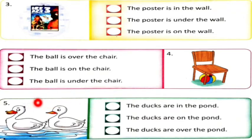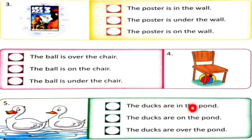And last one: Yeh ducks hain pond mein. 'The ducks are in the pond,' 'The ducks are on the pond,' 'The ducks are over the pond.' Toh correct sentence aapne dekhna hai kaun sa hai aur usko aapne tick karna hai.